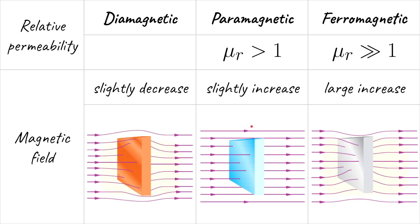Diamagnetic materials form internal induced magnetic fields opposite to the direction of the applied magnetic field, and their relative permeability is a bit less than one. When a diamagnetic material is placed in a field, the magnetic field lines bend slightly away from it.